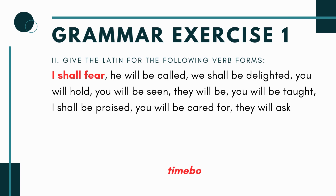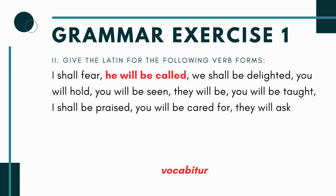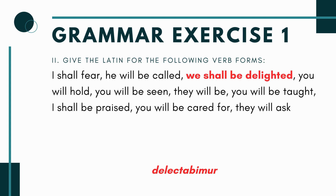The second section says: give the Latin for the following verb forms — these are in English, you're giving the Latin. So we just did Latin to English; now you're doing English to Latin. You have 'I will fear' or 'I shall fear' — that's 'timebo.' It's the verb timere, to fear, active voice, first person singular. To make it future, just go bo-bi-bi-bu — it's 'timebo.' Next you have 'he will be called' — this is going to be 'vocabitur,' third person singular passive voice future tense.